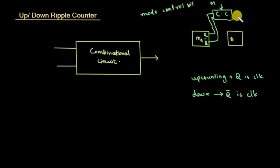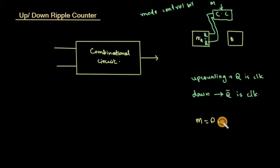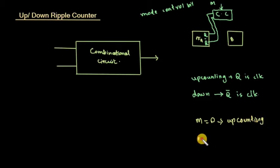We use a mode control bit. When M equals 0, up counting is performed. When M equals 1, down counting is performed.